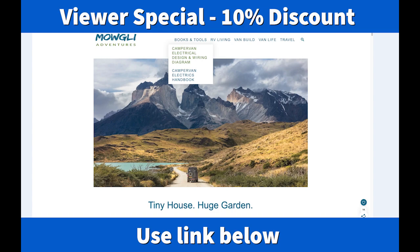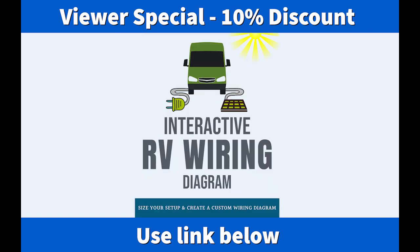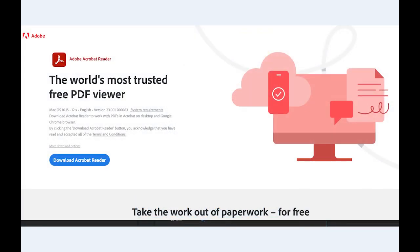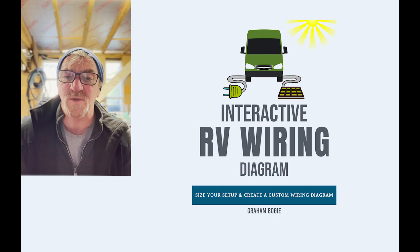Head over to mogliadventures.com and under the books and tools tab you can select the interactive wiring diagram. In fact you can select the bundle which will give you the handbook and the wiring diagram if you really don't know your way around campervan electrics. Having downloaded the interactive tool, you also need to head over to Adobe and download their PDF reader. If you try any other aftermarket products it doesn't work so well, so we're using Adobe products and we found that gives you the best results.